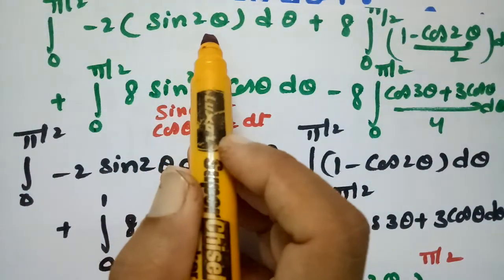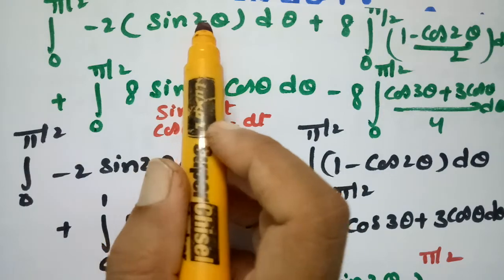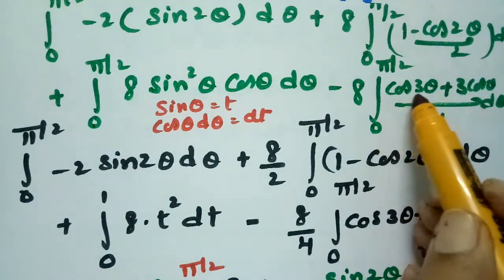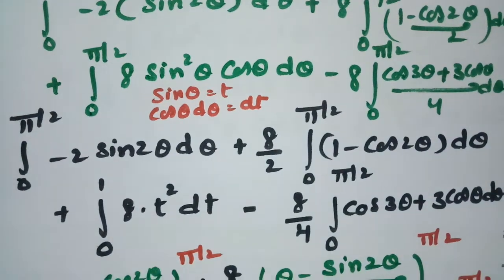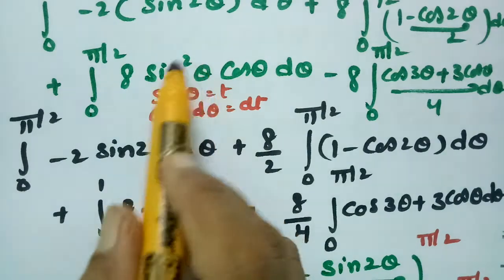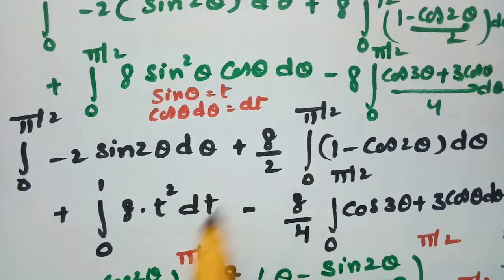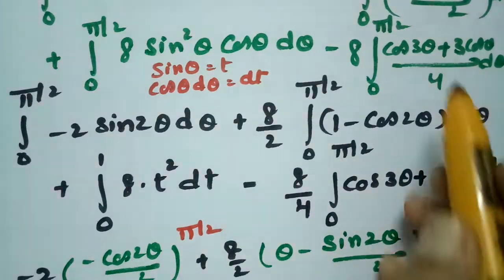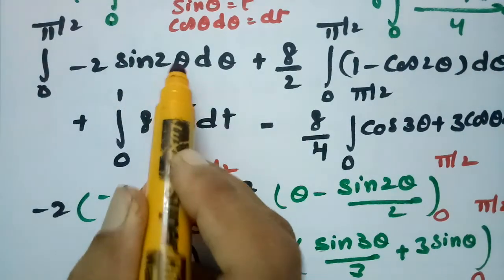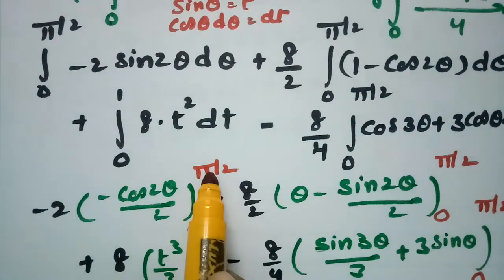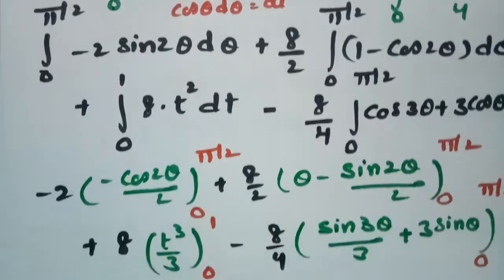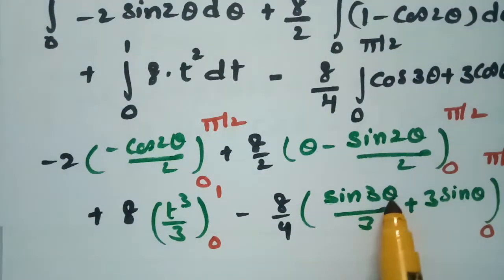To clarify: in place of 2 sin θ cos θ I wrote sin 2θ; in place of sin² θ I wrote (1 minus cos 2θ)/2; for the third integral I substituted sin θ equals t and dt equals cos θ dθ; and for cos³ θ I wrote (cos 3θ plus 3 cos θ)/4. Now integrating: for sin 2θ the result is minus cos 2θ/2; for 1 dθ it is θ; for cos 2θ the result is sin 2θ/2; for t² the result is t³/3; for cos 3θ the result is sin 3θ/3; and for cos θ the result is sin θ.